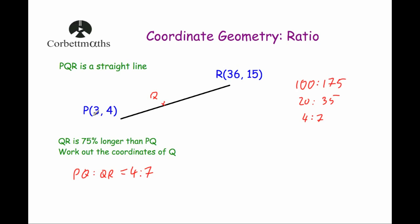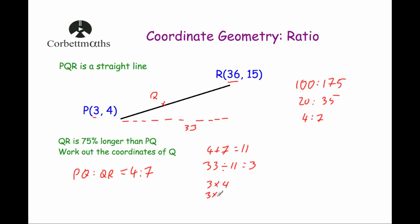Now considering horizontal distances: the x-coordinate of P is 3 and of R is 36, so the difference is 33. We divide 33 in the ratio 4 to 7. 4 plus 7 is 11, and 33 divided by 11 is 3. Then 3 times 4 is 12, and 3 times 7 is 21. So from P to Q horizontally is 12, and from Q to R is 21. The x-coordinate of Q is 3 plus 12, which is 15.